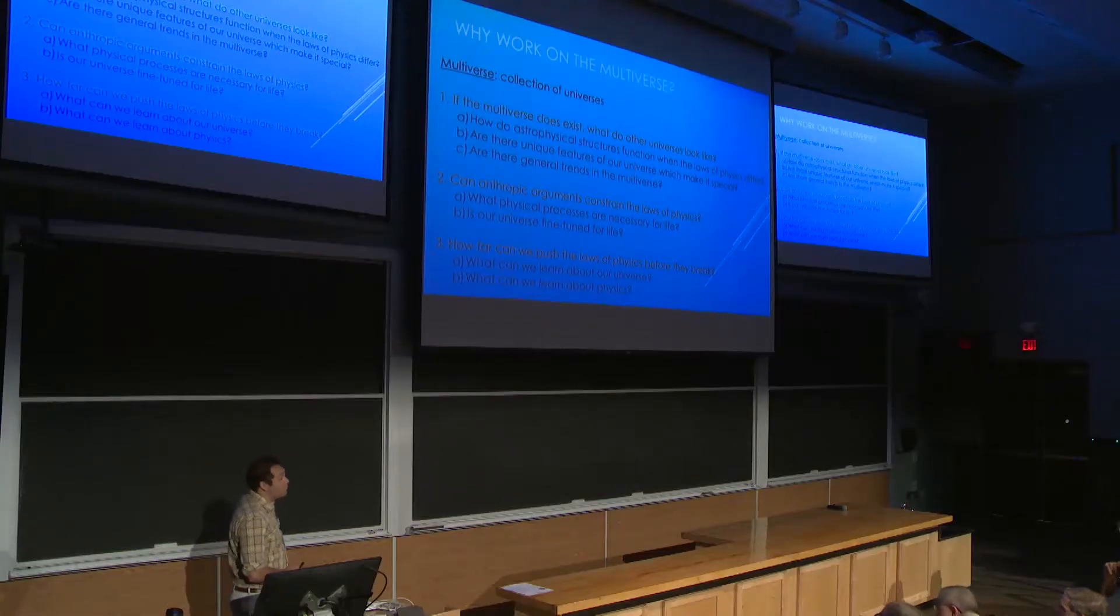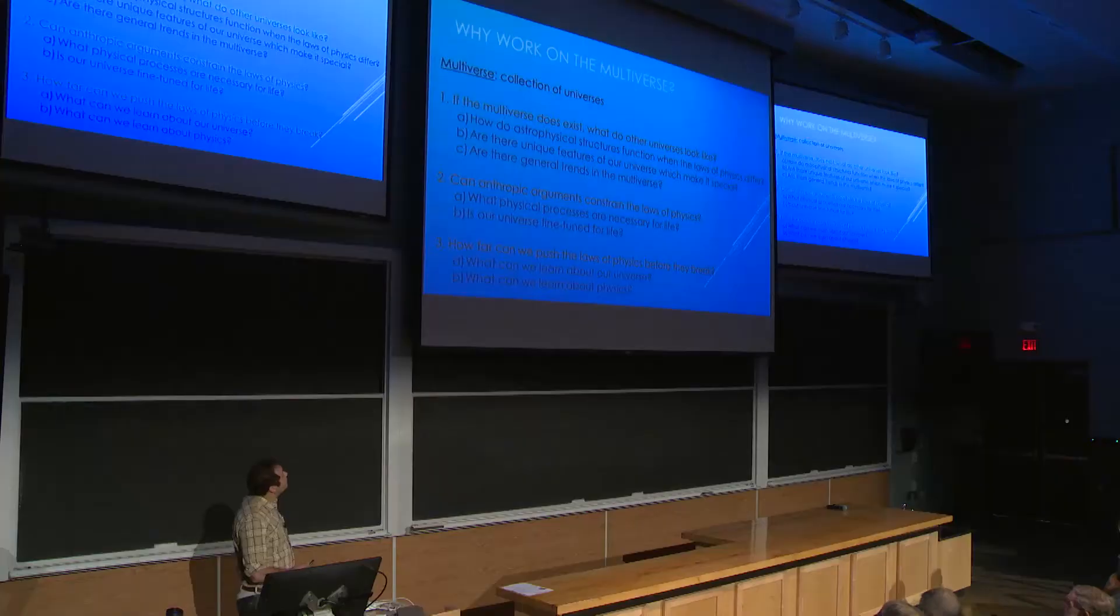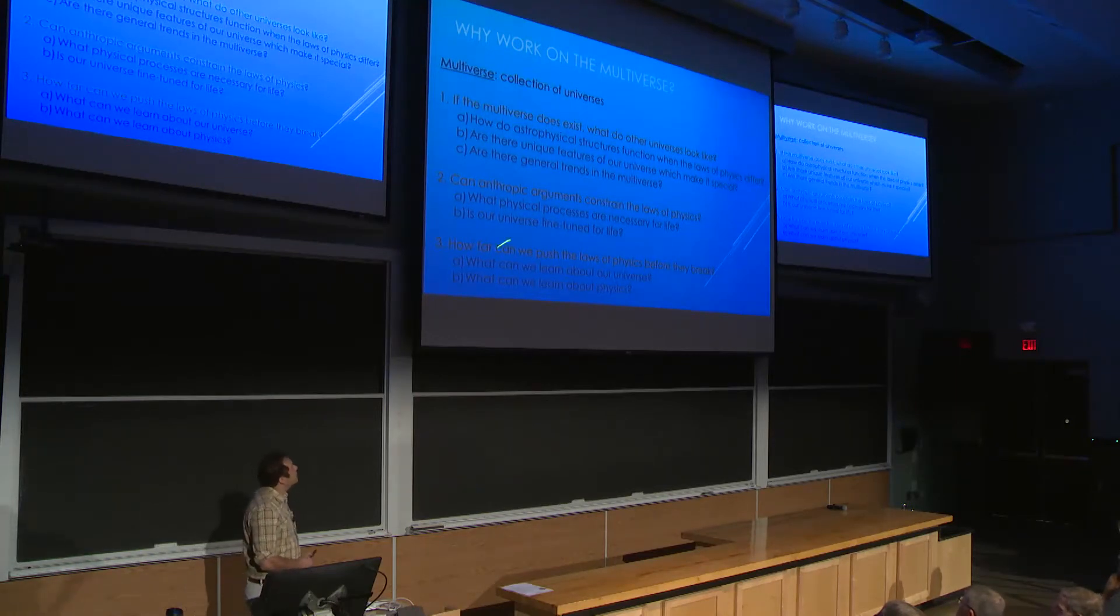We're basically just going to treat the multiverse as a collection or ensemble of universes where the constants of nature and the physics itself could be different. So if this multiverse does exist, we want to know what does it look like? Is there anything special in our universe or are there any general features of different universes?